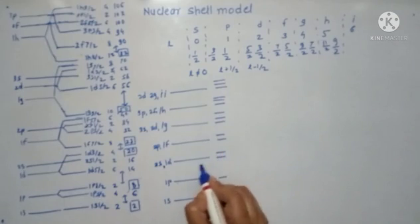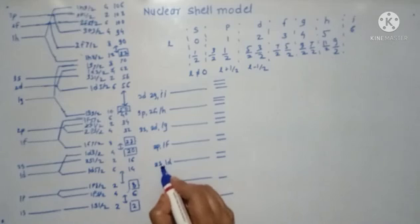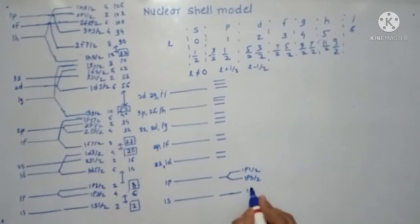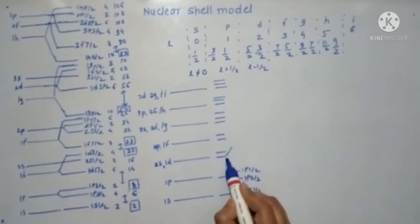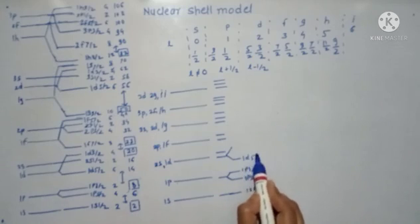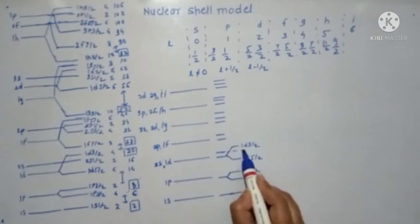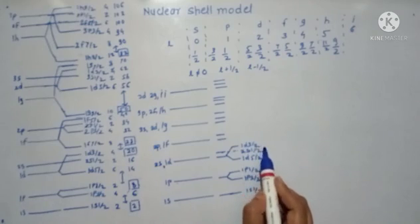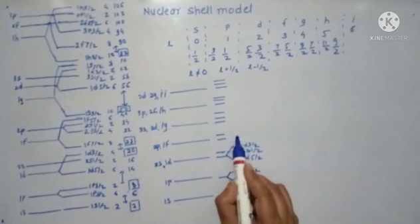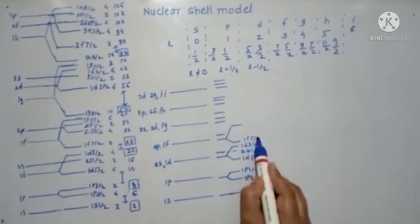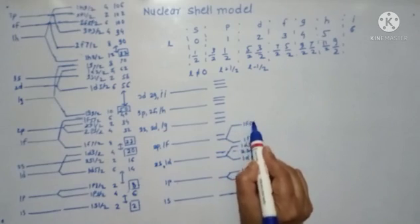There is a little bit of shifting of the 1d and 2s orbitals. The 1p orbital splits into 1p 3/2 and 1p 1/2. The 1s 1/2 will remain as it is — it is not splitting. The 1d orbit splits into 1d 5/2 and 1d 3/2. Then 2s 1/2 follows, and the 1f orbit splits into 1f 7/2 and 1f 5/2.